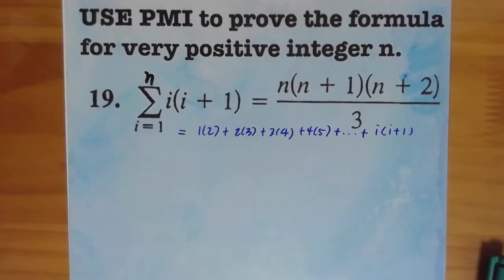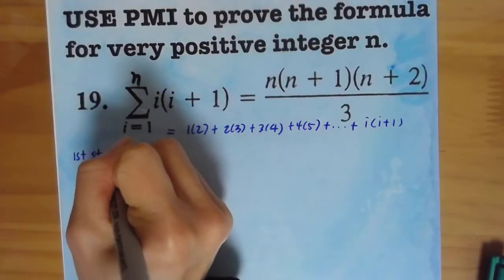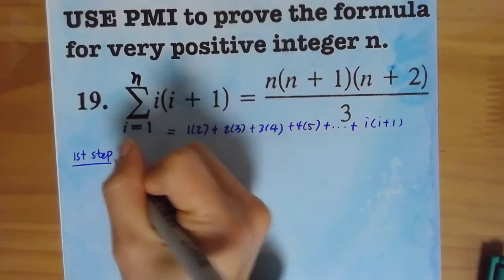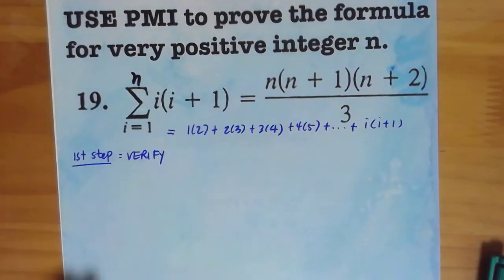You've got to understand both ways. Again, what's the first step? Why don't you stop the video and try the first step on your own? You're right. It's to verify. First step verify, second step inductive, third step conclusion, right?